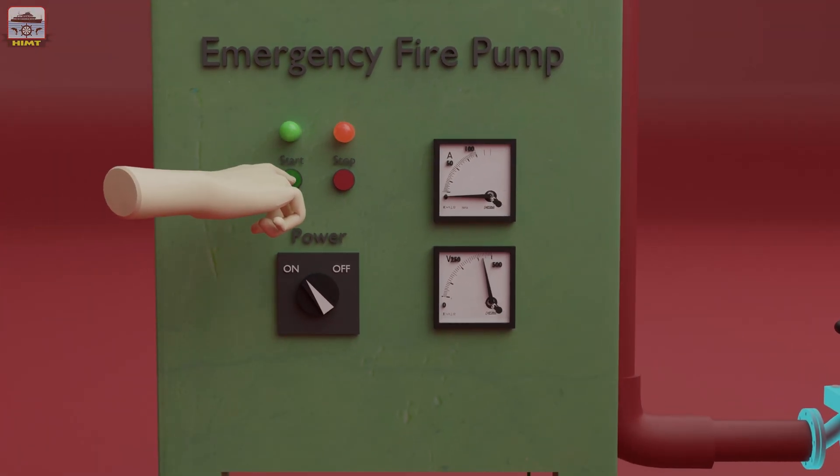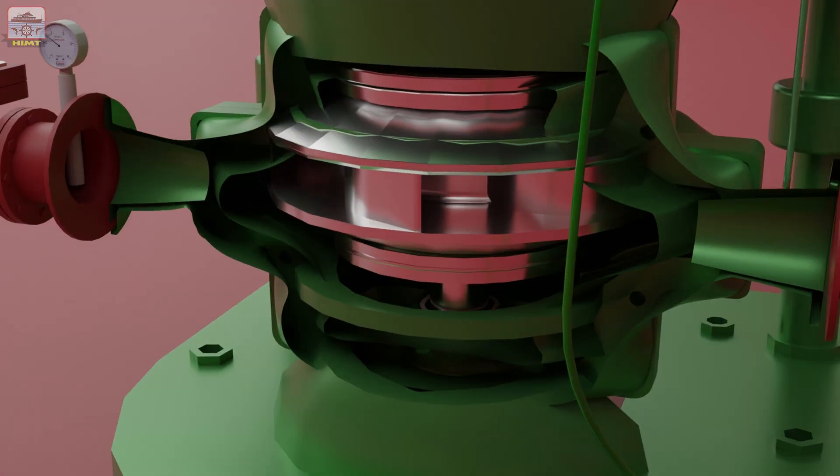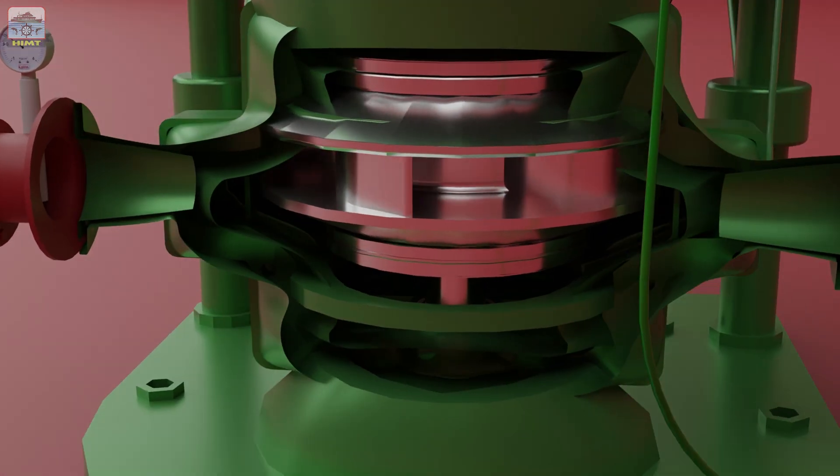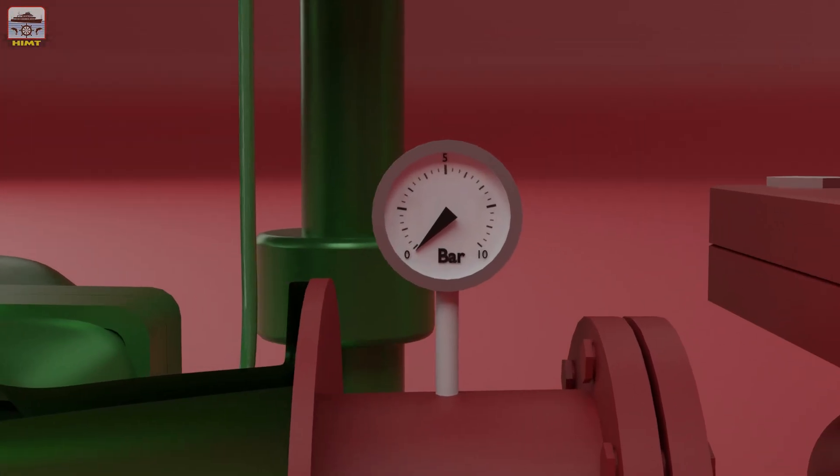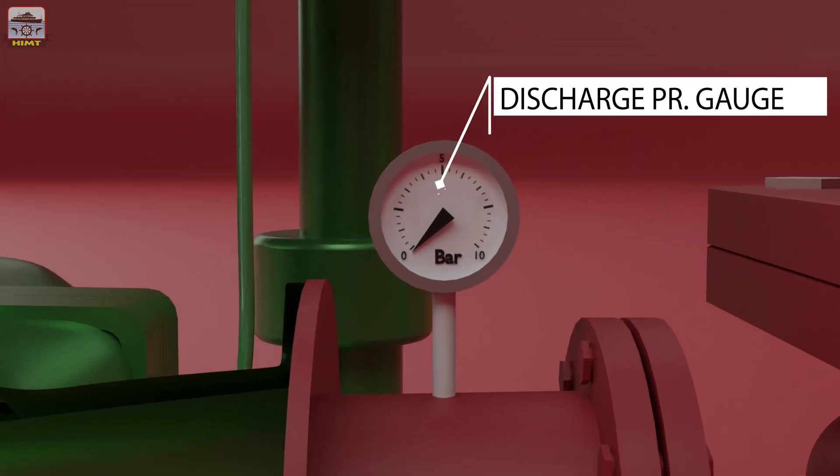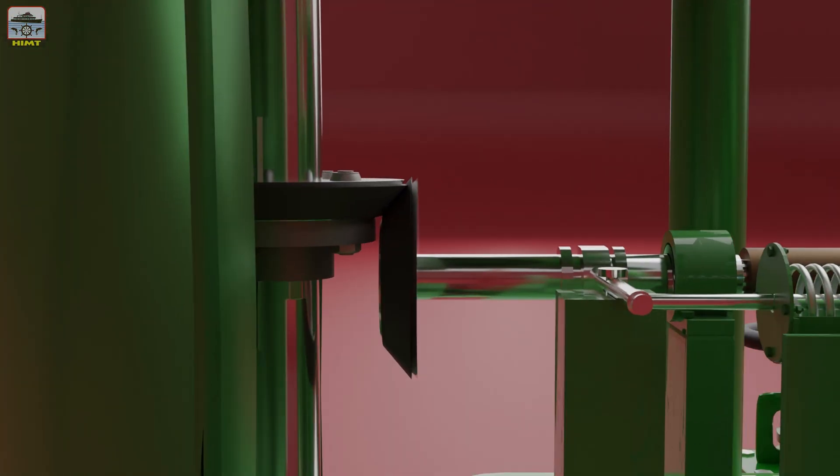When the main pump is started, as there is no water inside the centrifugal pump initially, the pump is not developing the discharge pressure. The auto cylinder keeps the primer pump shaft engaged with the motor shaft.